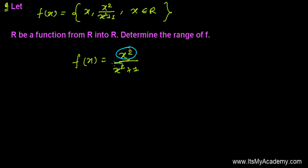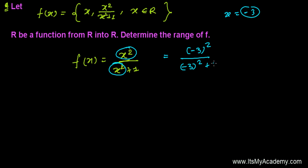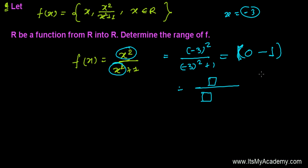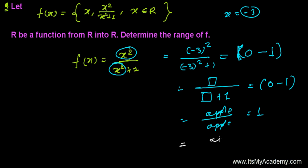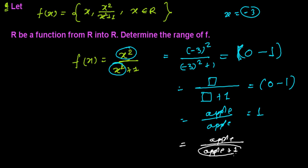Let's say x is any number — for example, minus 3. So it's (-3)² / ((-3)² + 1). This will always give a value between 0 and 1, because you have some value and you're dividing by that same value plus 1, making the denominator even bigger. Like if I have one apple and divide it by that same apple plus something more, the denominator is bigger, so the answer is always less than 1.